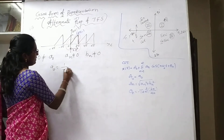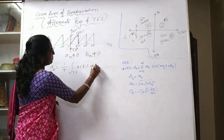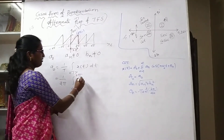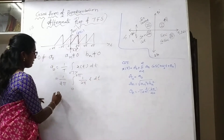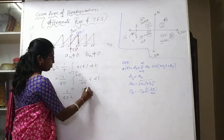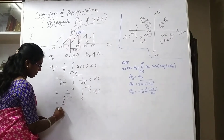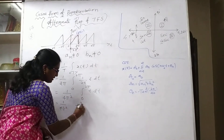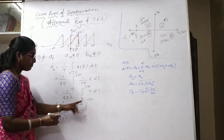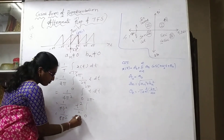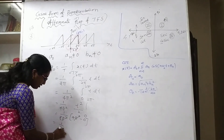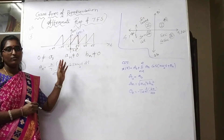The A₀ formula is (1/T)∫x(t)dt over one time period. With T = 2π: A₀ = (1/2π)∫₀²π (t/2π)dt = (1/4π²)∫₀²π t dt = (1/4π²)[t²/2]₀²π = (1/8π²)(4π²) = 1/2. So A₀ = 1/2.